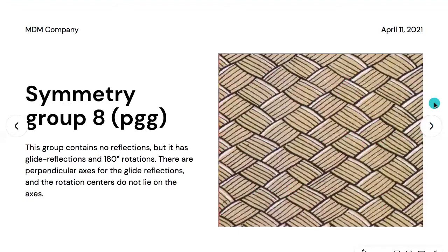Symmetry group eight is named PGG. This group contains no reflections, but it has glide reflections and 180-degree rotations. There are perpendicular axes for the glide reflections and the rotation centers do not lie on the axes.